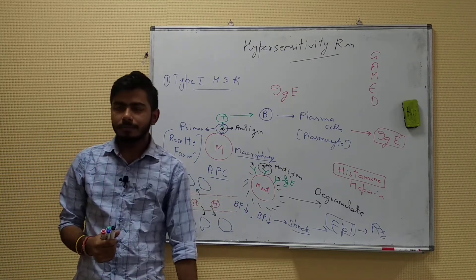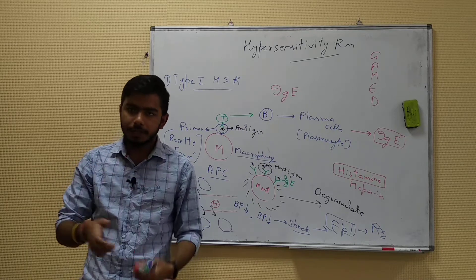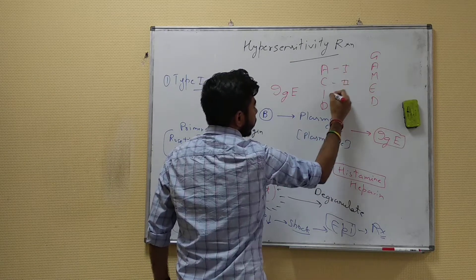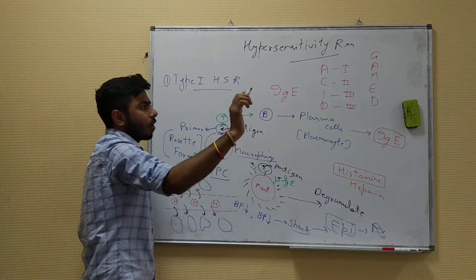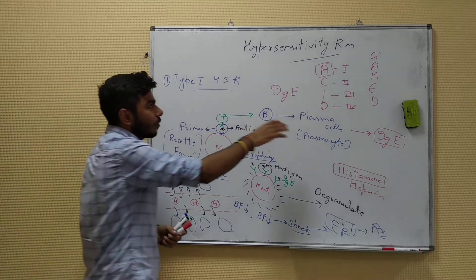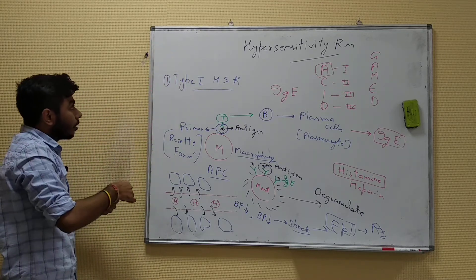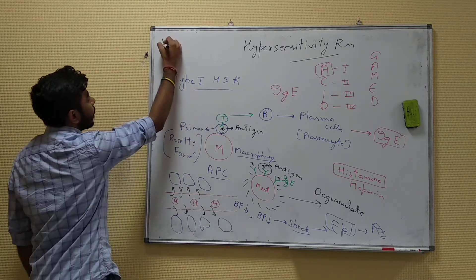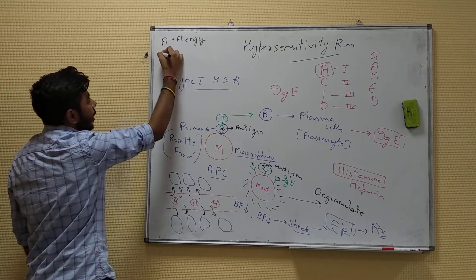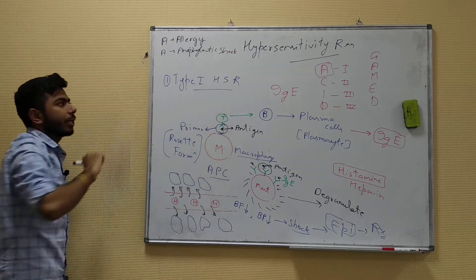For remembering hypersensitivity types, use the mnemonic ACID: A for type 1, C for type 2, I for type 3, D for type 4. Examples of type 1 hypersensitivity include any kind of allergy and anaphylactic shock, which is a very dangerous situation.